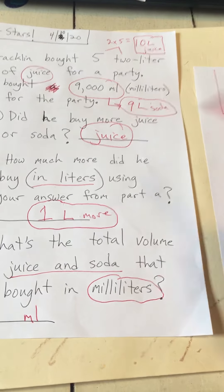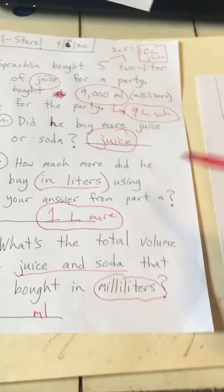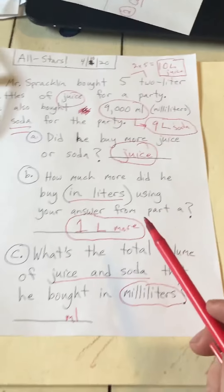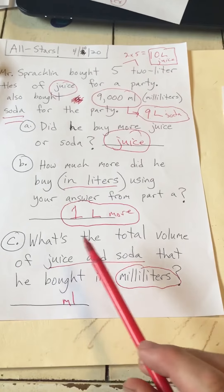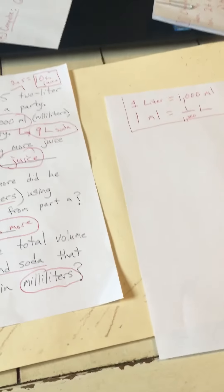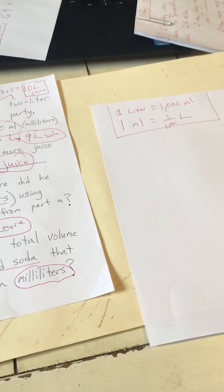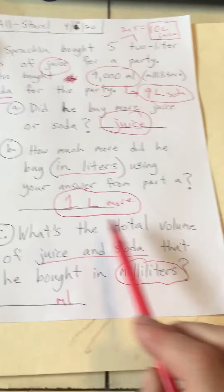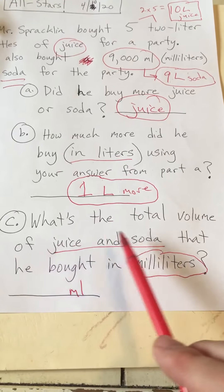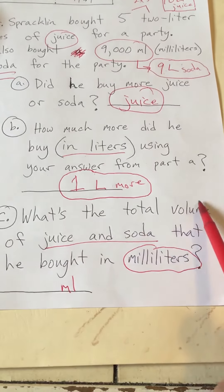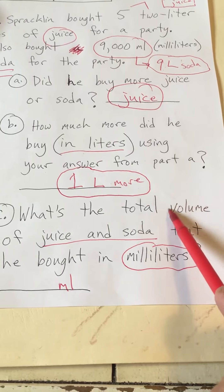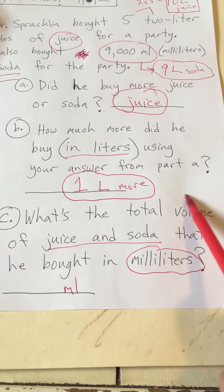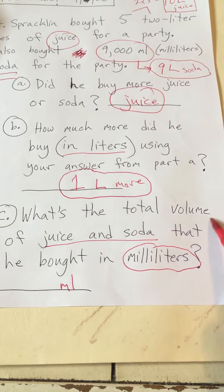For part B we did ten liters of juice minus nine liters of soda — ten minus nine is one. For part C: what's the total volume of juice and soda? Volume here just means the total amount of liquid that we have.